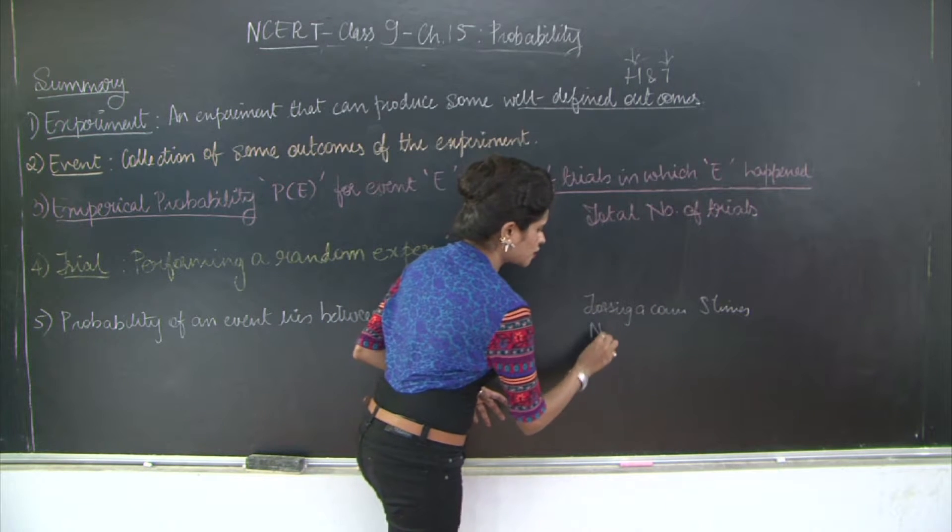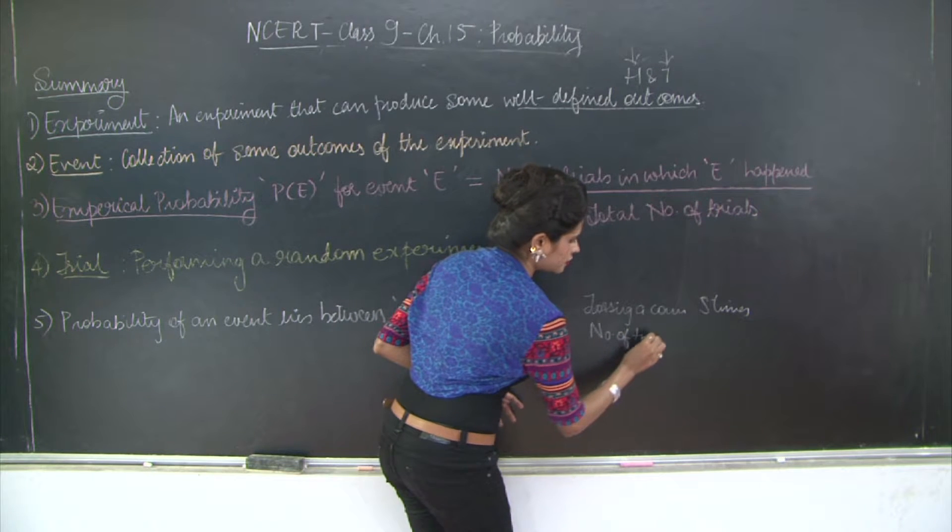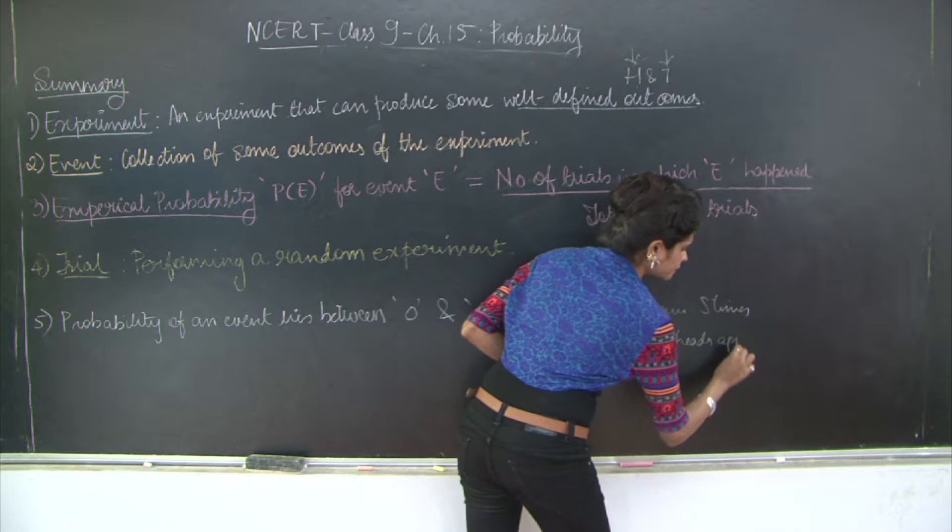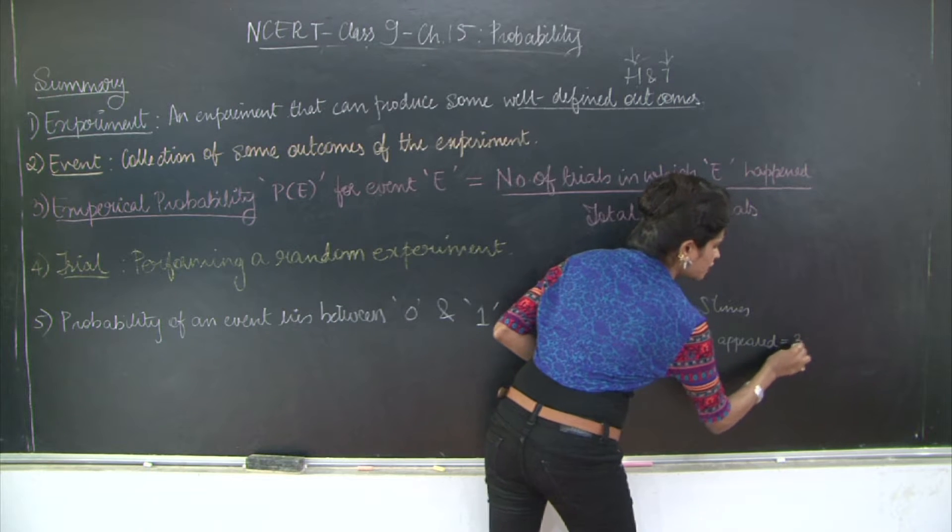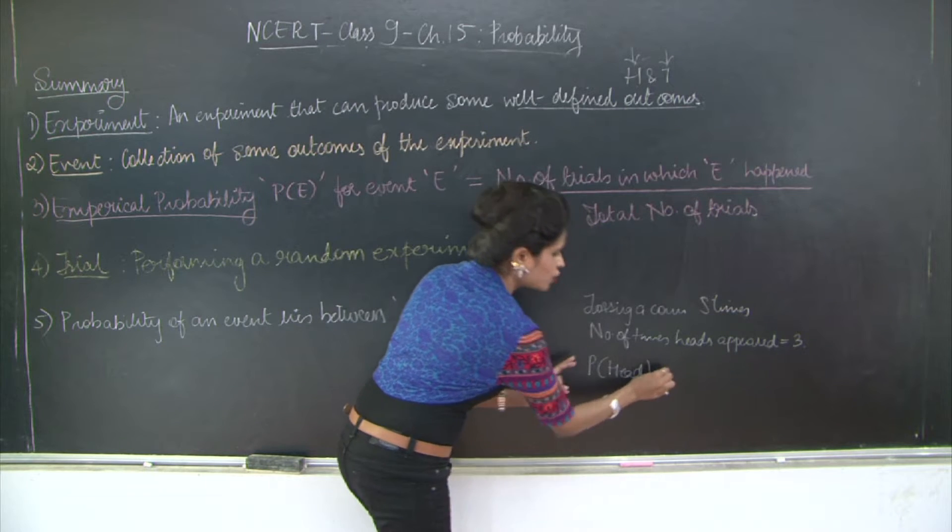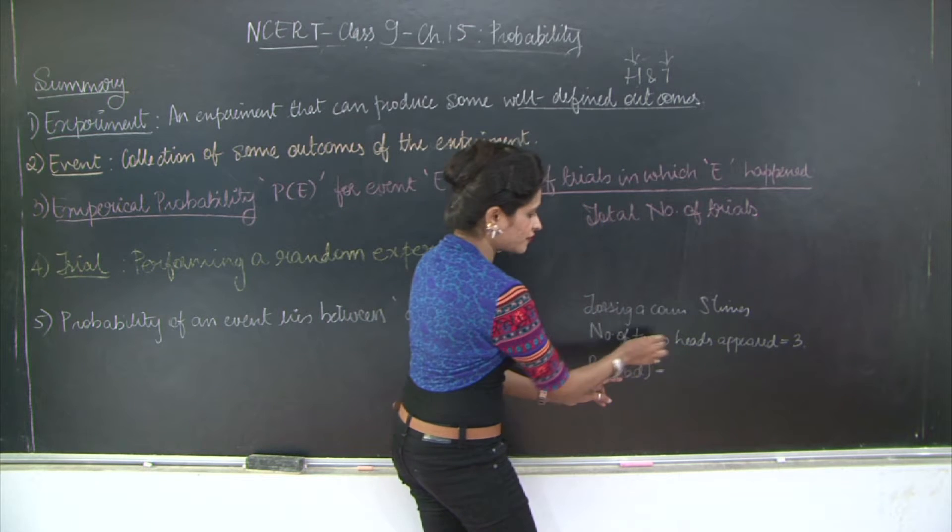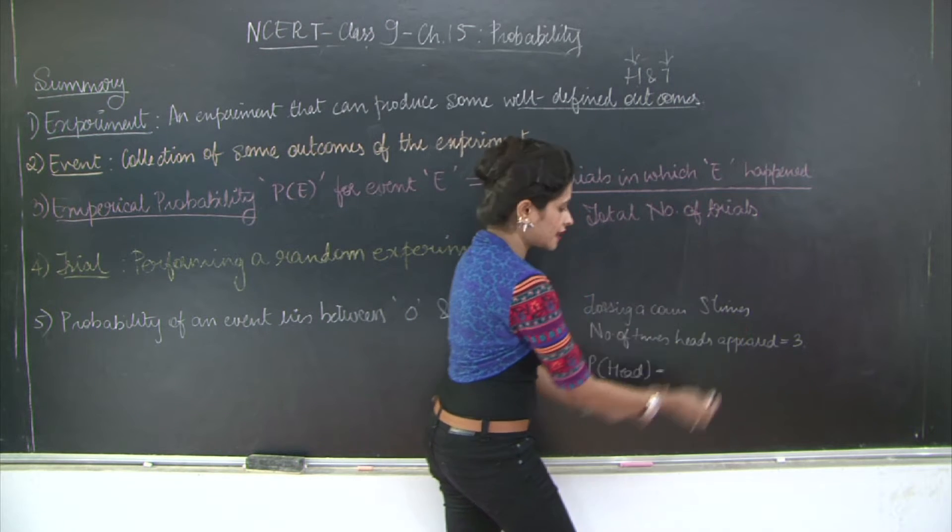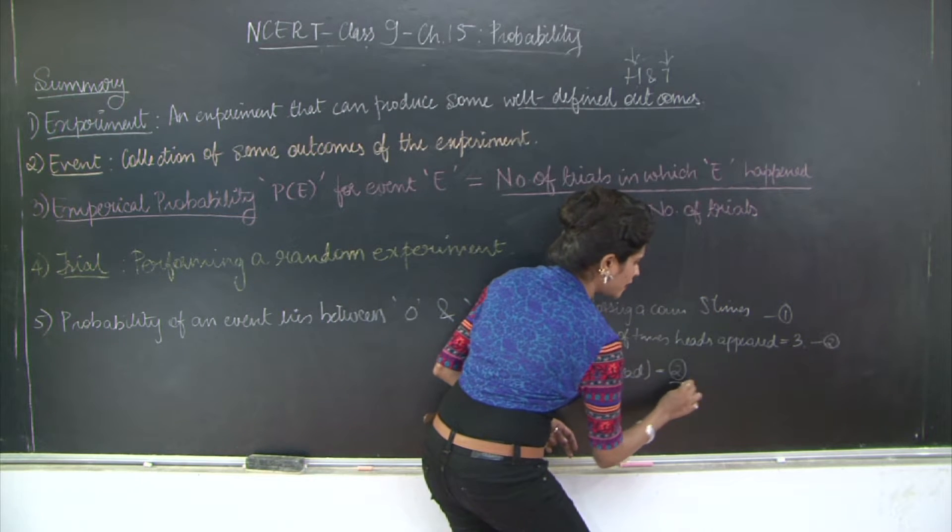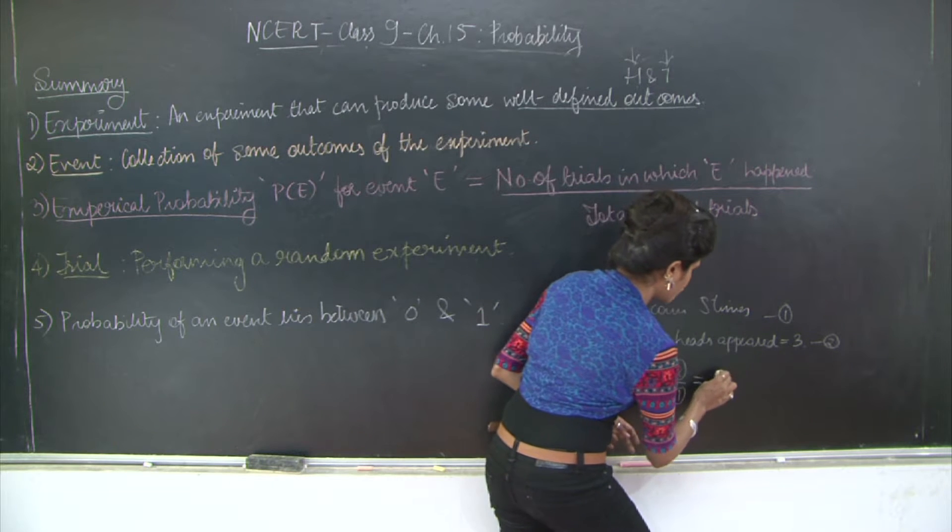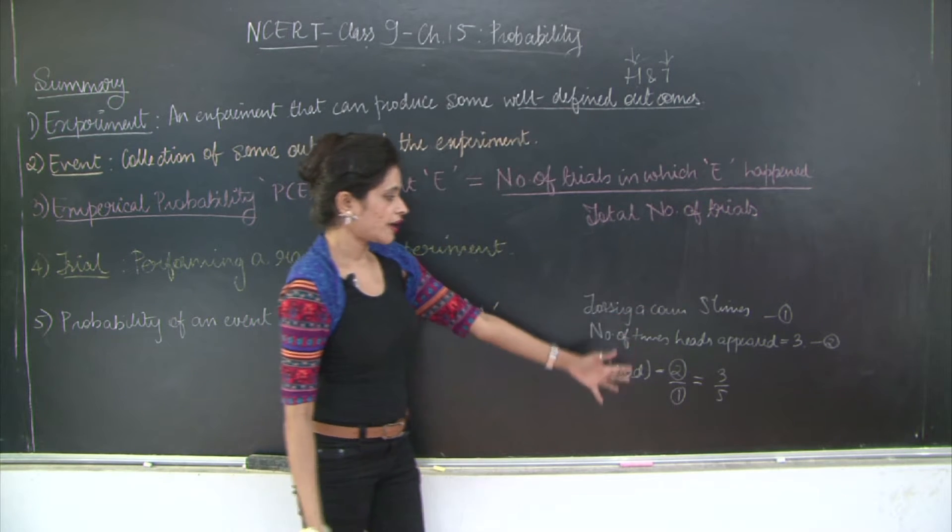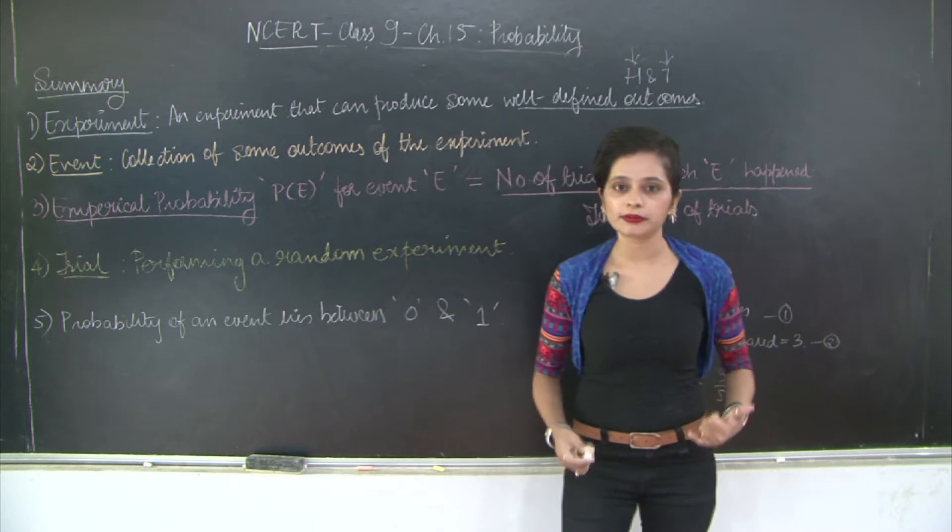And the number of times you got heads, heads appeared was three. So the empirical probability for heads, so I'm going to say P(head) is going to be number of heads appeared, number of times that heads appeared divided by the total number of times that the coin was tossed. So I'm going to mark this as 2 and this as 1. It is going to be 2 divided by 1, which is going to be equal to 3 divided by 5. So 2 divided by 1 means equation 2 divided by equation 1. So I hope you got a clearer picture when I explained empirical probability with an example.